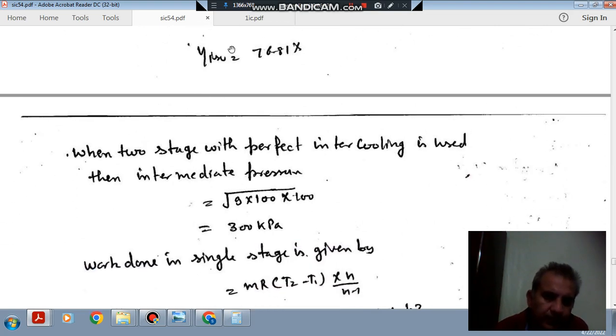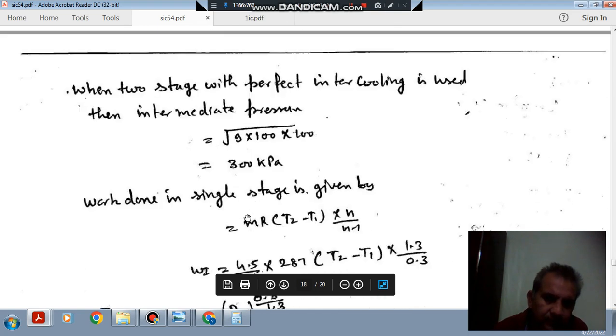Next, it is replaced by a two-stage compressor with perfect intercooling. For perfect intercooling, intermediate pressure should be the square root of P1 times P2. So we have 9 bar and 1 bar, so 9 into 100 will be 900 kPa and this will be 100 kPa, and intermediate pressure will be 300 kPa.